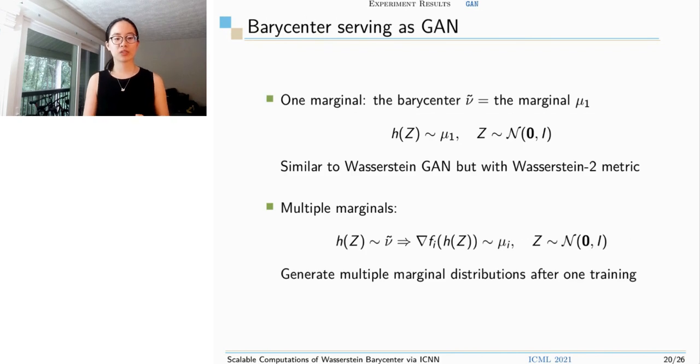Next, I would like to introduce another function of our method. It could work as a GAN. When there is only one marginal, the barycenter is equal to that marginal. So through generator, we could generate as many samples as we want from that marginal distribution. It's very similar to Wasserstein GAN, but we are minimizing the Wasserstein 2 metric. A more inspiring result is that we could recover multiple marginal distributions after one training.